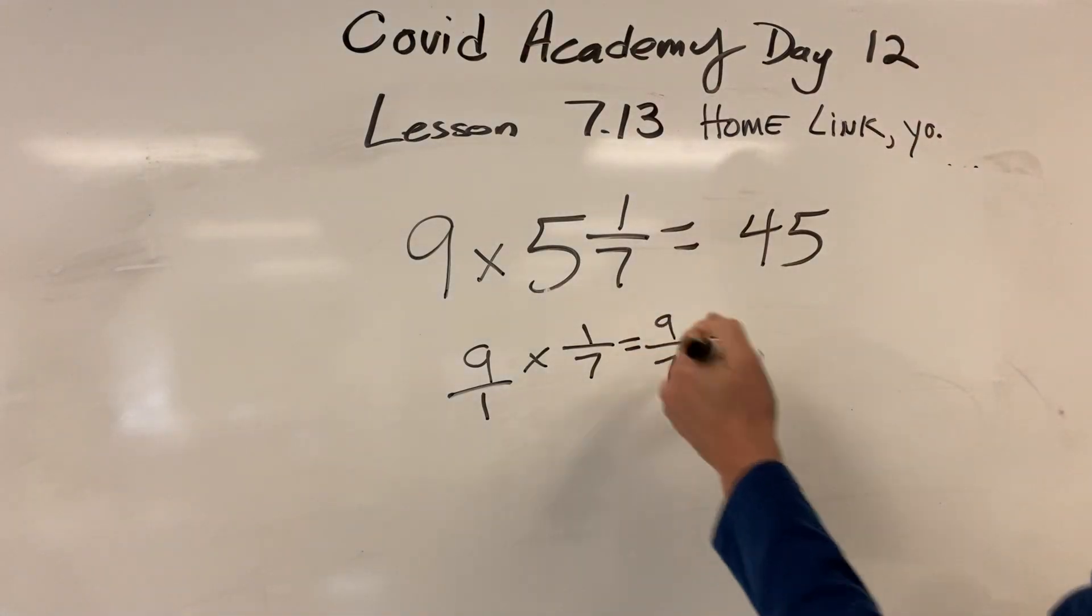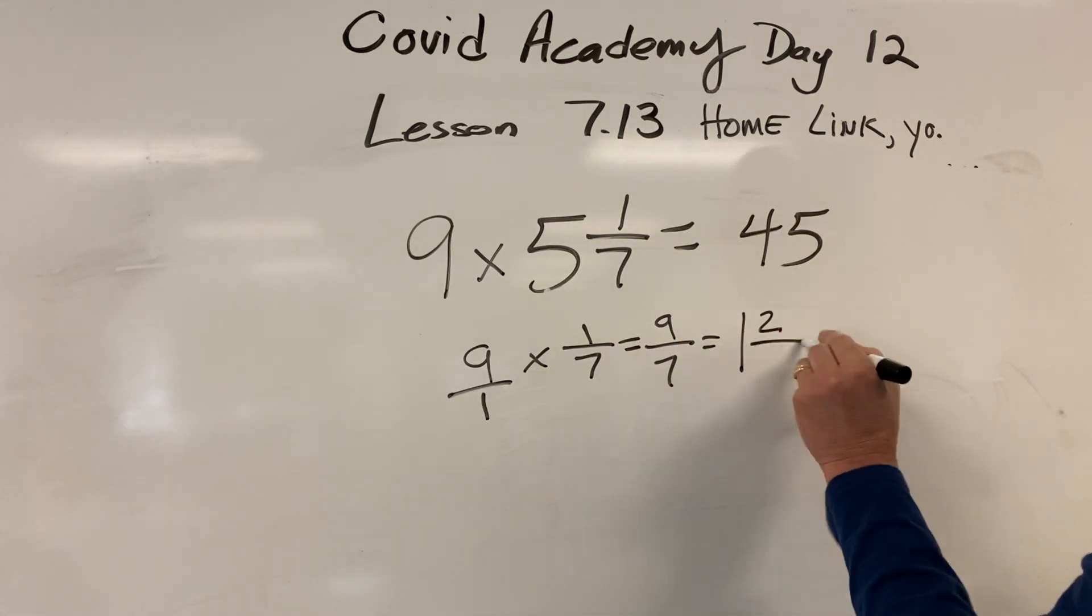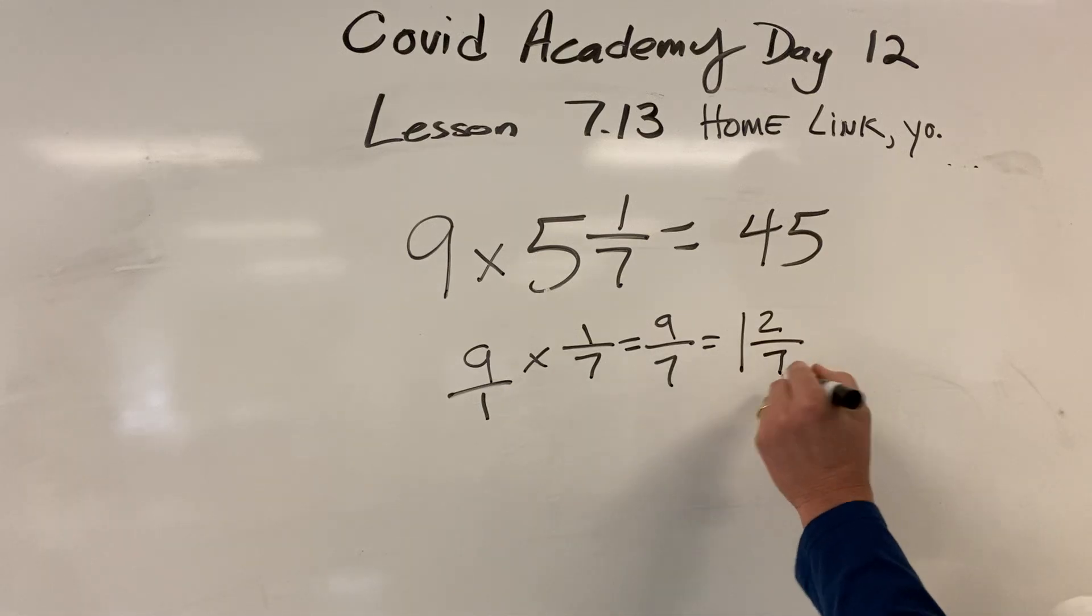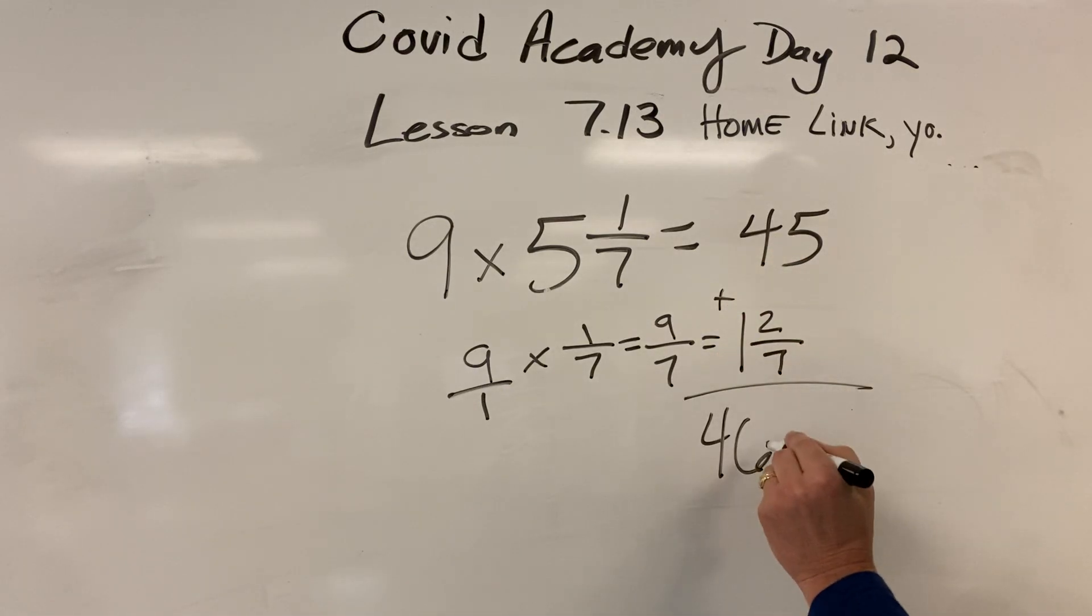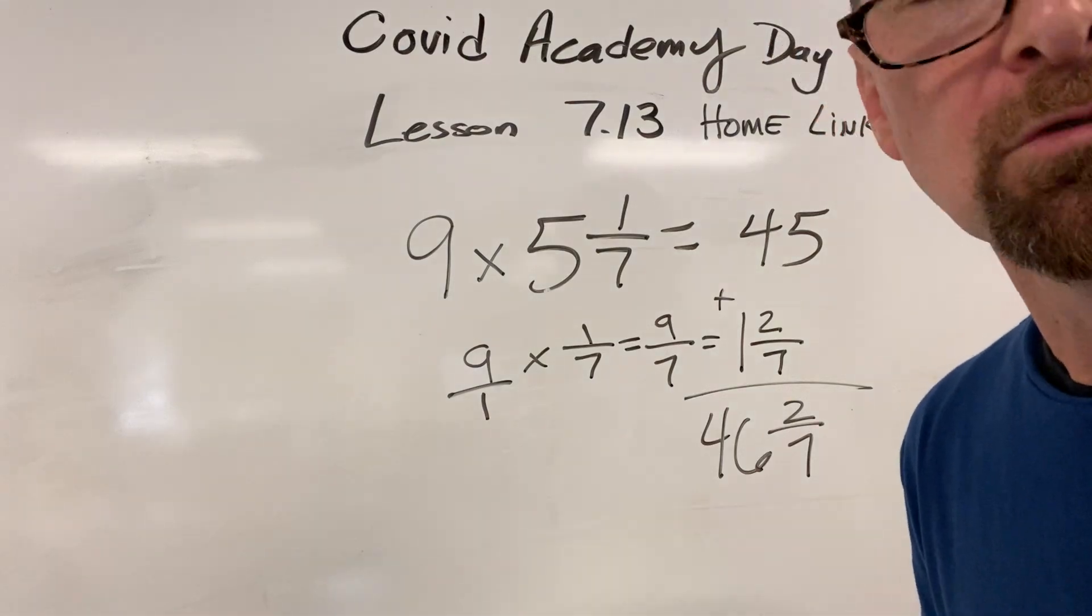This is 1. 7 fits into 9 once with 2 left over. So, 1 and 2 sevenths. Put these two together, we get 46 and 2 sevenths. That concludes today's math work. Goodbye.